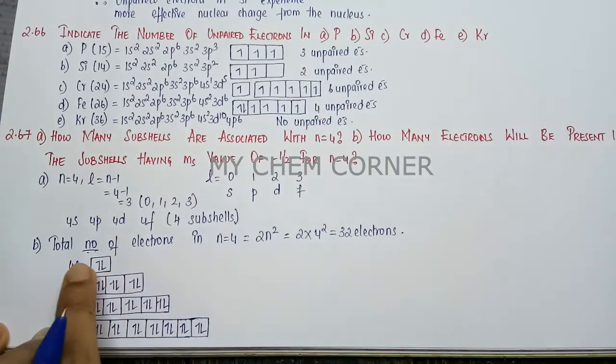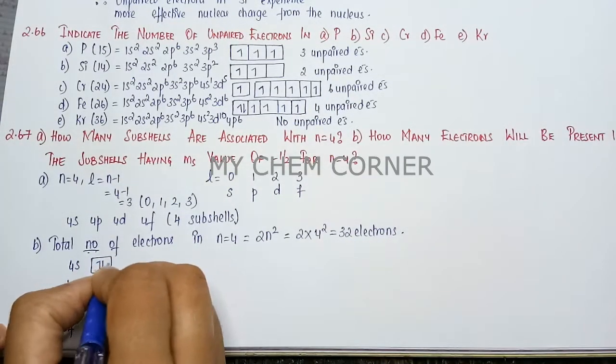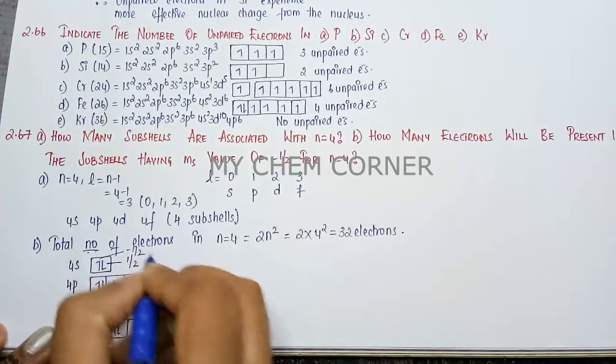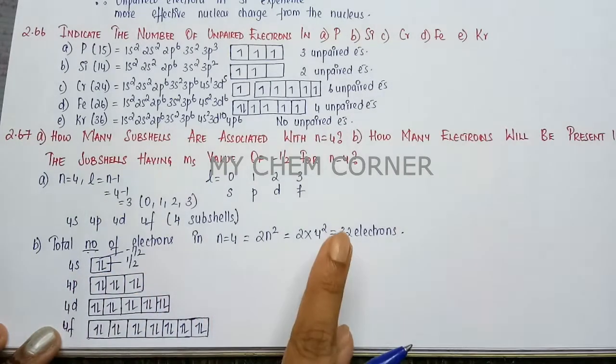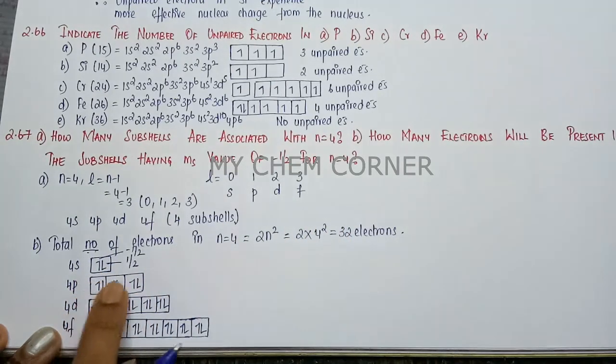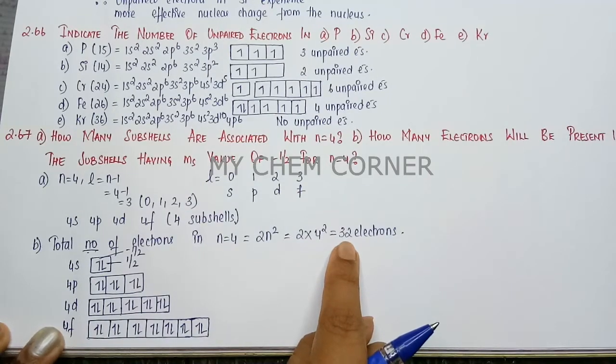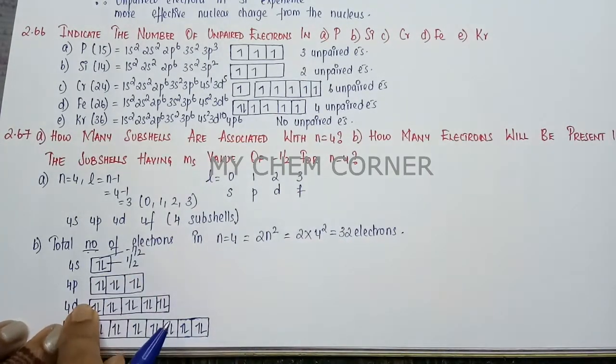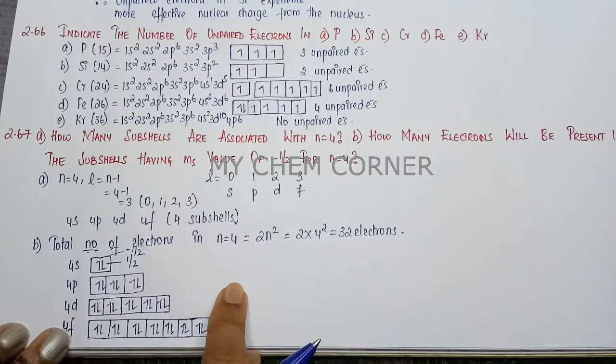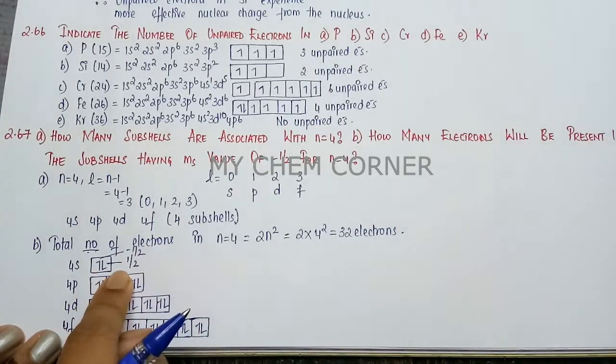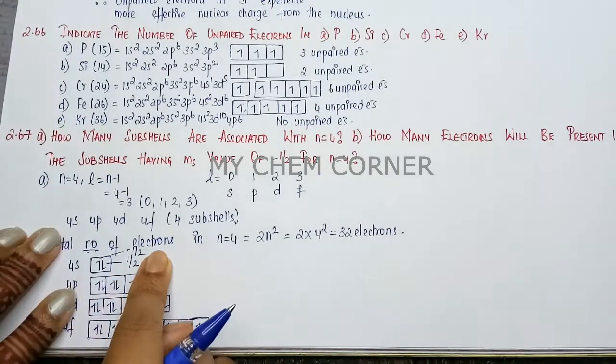But in this if you see each orbital, one electron is plus half, the other electron is minus half. So in each orbital, one is minus half, one is plus half. The same thing in each of this. So when I have 32 electrons, which means to say the other half of the electron, one half is plus half, the other half is minus half. So half of 32 is 16. So 16 electrons will be plus half, 16 electrons will be minus half.